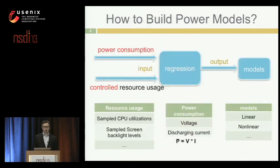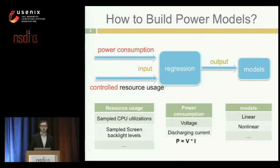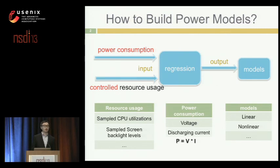How do we build a power model? We need two categories of information. The first is power consumption, which comes from two pieces of information: voltage and discharging current. Multiplying these two values gives us the power we need for modeling. The second category is resource usage, including CPU utilization, backlight level, and Wi-Fi traffic — kept in a controlled way so we know exactly what the workload is on different hardware components. We feed this into a regression program and can generate linear or nonlinear models based on requirements.